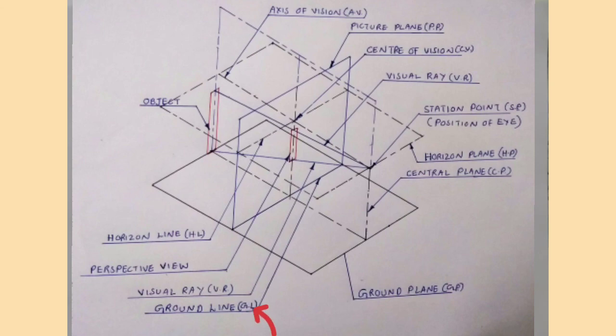It is the intersection of picture plane with the ground plane. There is another imaginary plane called horizon plane, which is parallel to the ground plane and perpendicular to the picture plane. Horizon plane lies at the level of observer's eye.